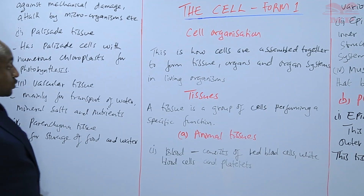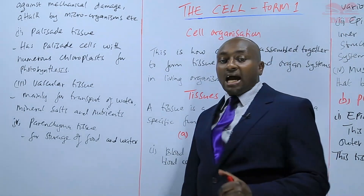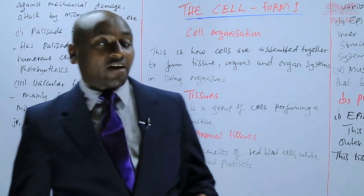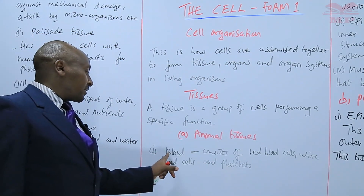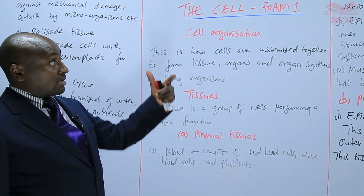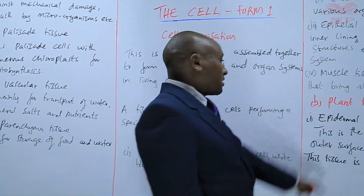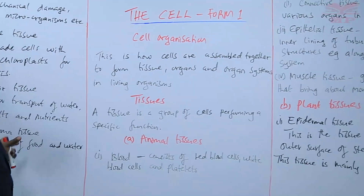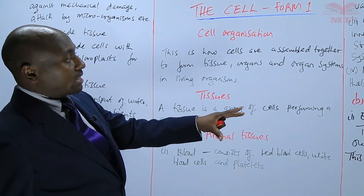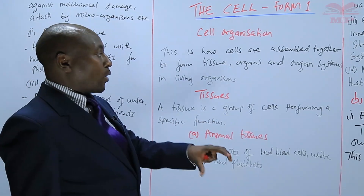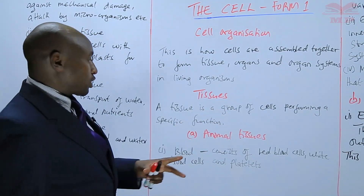So basically, those are some of the tissues we have in animals and also in plants, and they carry out different functions. In other topics we'll discuss blood and other tissues in relation to animals, and the same applies to plants. For now, this is just to make you aware that they exist and they carry out specific functions.